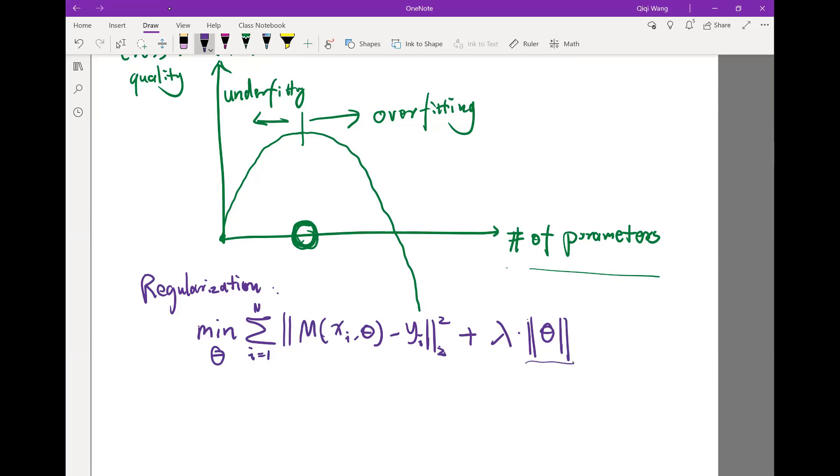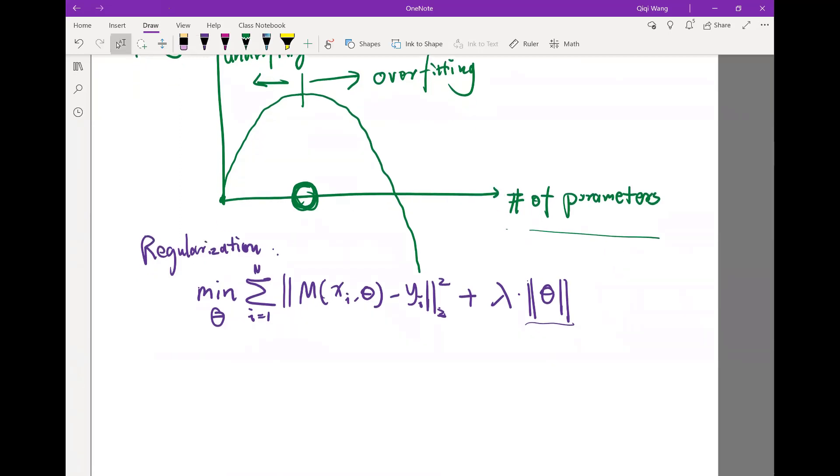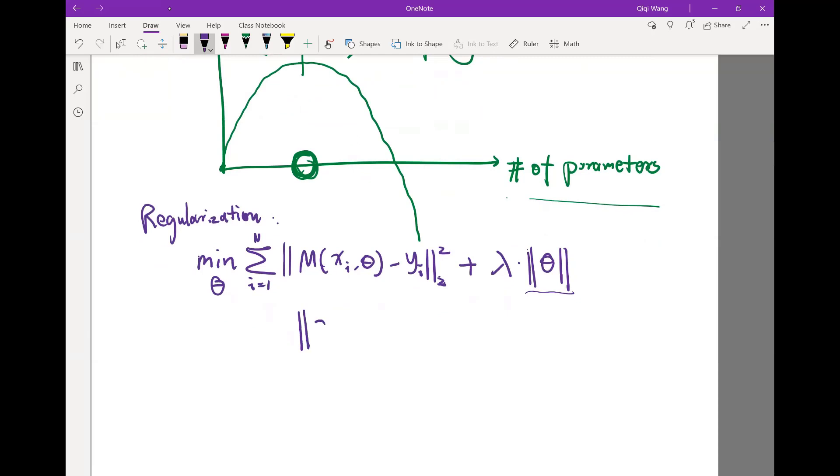And this norm could be, for example, L1 norm or L2 norm, or even L0 norm. So let's say if the norm of theta is called the L0 norm, it is defined as the number of nonzero entries in theta.